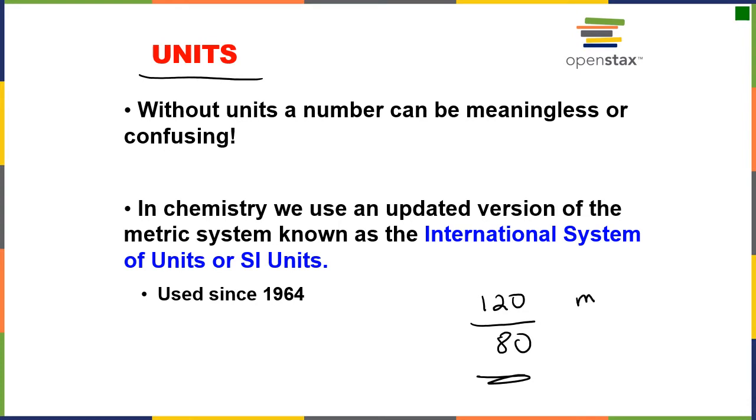That is, in fact, millimeters of mercury, which is a unit of pressure that we'll talk about in Chapter 9. In chemistry, we tend to use an updated version of the metric system that's called the International System or the SI unit system, and it's been used since about 1964. We kind of use it and we kind of don't, but let's make sure we understand the metric system and the SI units as we need them.